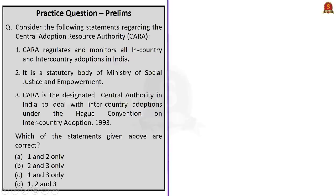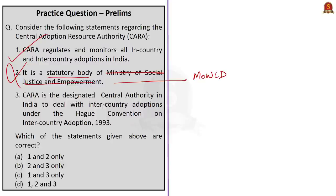The next question is based on the Central Adoption Resource Authority. Statement 1: CARA regulates and monitors all in-country and inter-country adoptions in India — correct. Statement 2: it is a statutory body of the Ministry of Social Justice and Empowerment — incorrect, as it comes under the Ministry of Women and Child Development. Statement 3: CARA is the designated central authority to deal with inter-country adoptions under the Hague Convention on Inter-Country Adoption of 1993 — correct. The correct answer is Option C: 1 and 3 only.